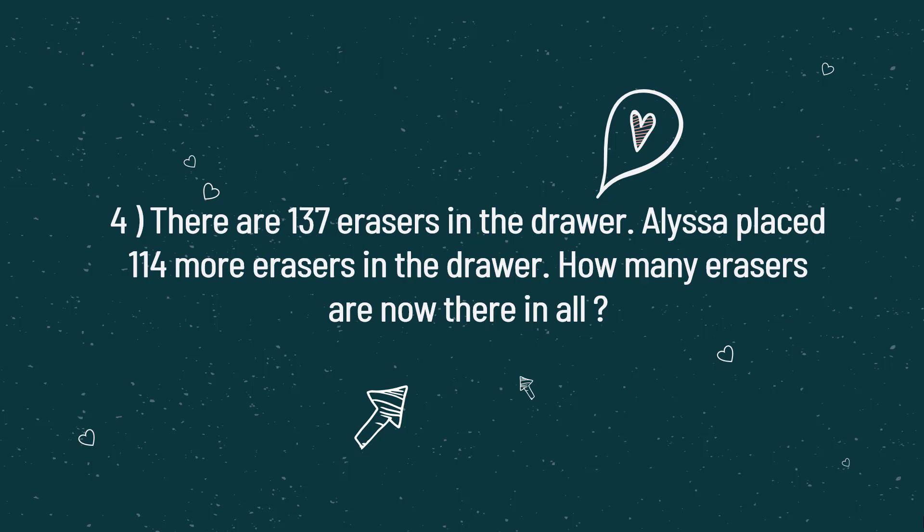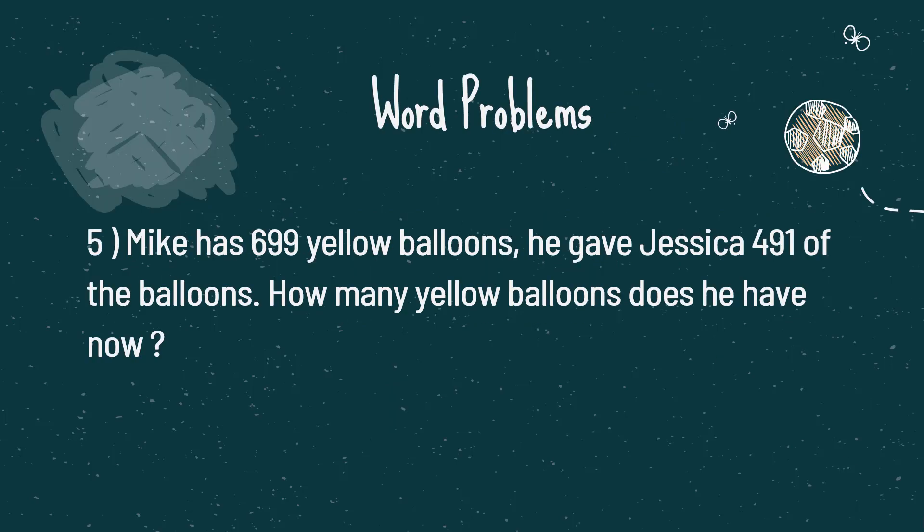Problem number five. Mike has 699 yellow balloons. He gave Jessica 491 of the balloons. How many yellow balloons does he have now?